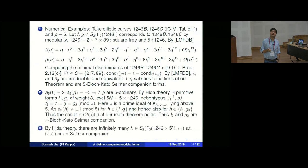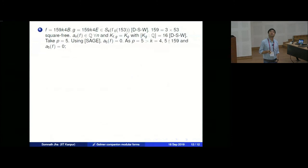Here is another example — this time of the supersingular case. From a paper of Dummigan-Stein-Watkins related to visibility, there is a form f of weight 4, level 159 = 3·53, which is squarefree. The Fourier coefficients of f are in Q, but those of g generate a number field of degree 16. Taking p = 5, we compute using Sage that a_5(f) = 0.